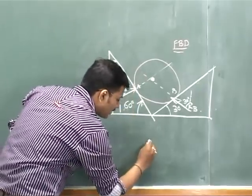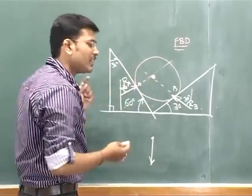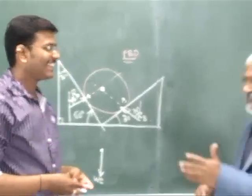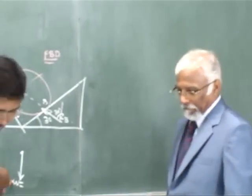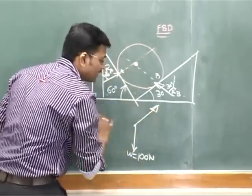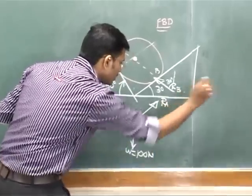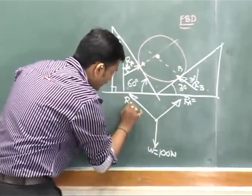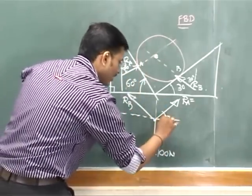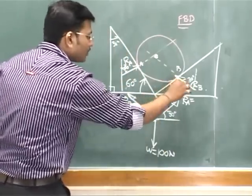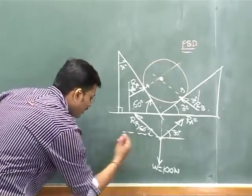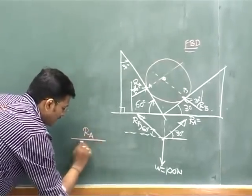Drawing the FBD at the center point of the ball: the first force is the weight component acting downward (100 Newtons); the second is reaction Ra acting along the first wall's normal; the third is reaction Rb along the second wall's normal. Ra makes 30 degrees with horizontal (60 degrees with vertical), and Rb makes 60 degrees with horizontal (30 degrees with vertical). Lami's theorem is then applied.